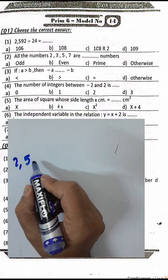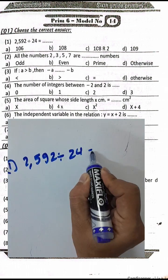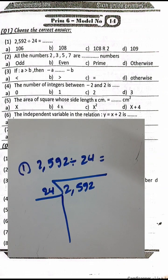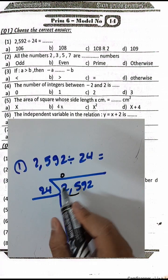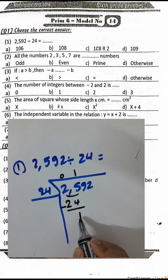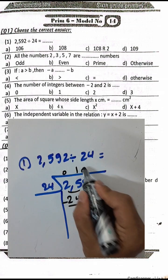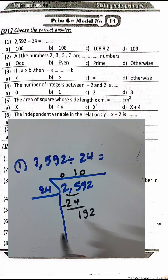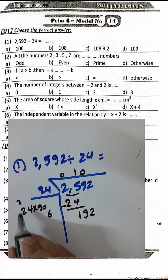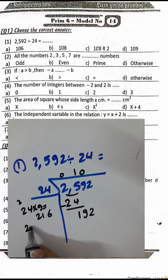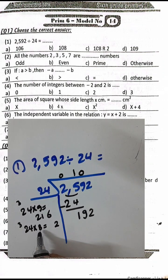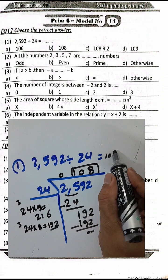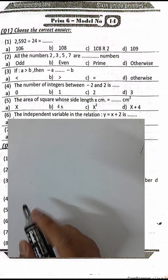We have 2592 divided by 24 using long division. First step: 2 divided by 24 — continue with 0. 25 divided by 24 equals 1; 1 times 24 equals 24. Find the difference, then drop 9: 19 divided by 24 gives 0, drop 2. 192 divided by 24 — cancel digit by digit: 9 times 24 gives 216, 8 times 24 gives 192 exactly. The result is 108. Choose letter B.